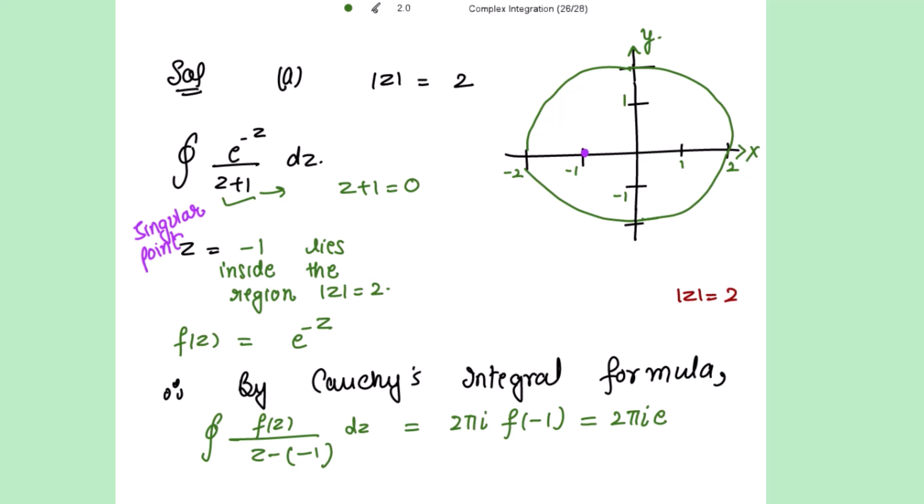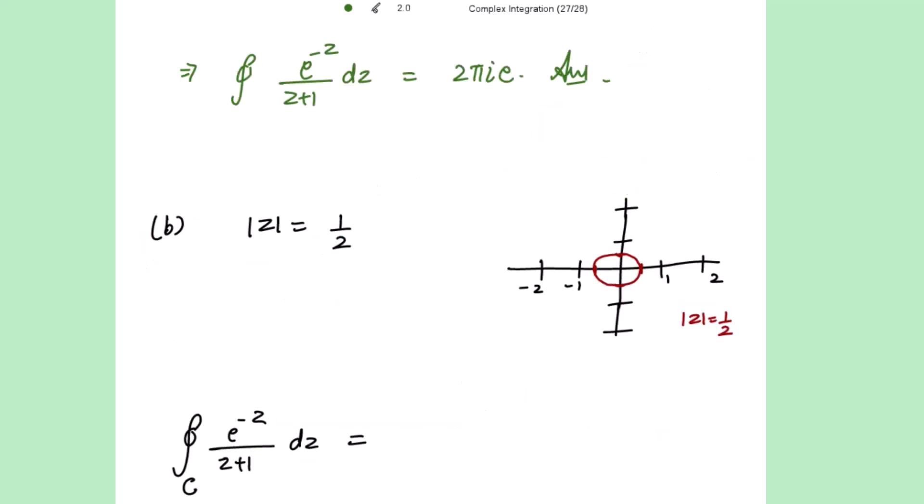Now for the given integral, the singular point is z equal to minus 1. By putting the denominator equal to 0, we get the singular point as z equal to minus 1. And z equal to minus 1, if you see over here, lies at here.